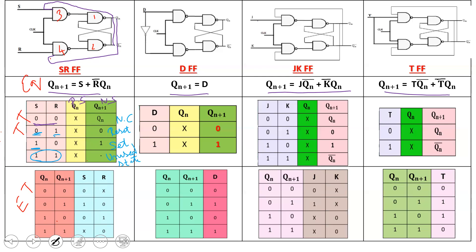For D flip-flop, the input can be 0 or 1, and Qn can be 0 or 1. D flip-flop is the data flip-flop — whatever the input is, the output will follow. D=0 means the next state is 0. D=1 means the next state is 1. Set and reset are unused states of the D flip-flop.